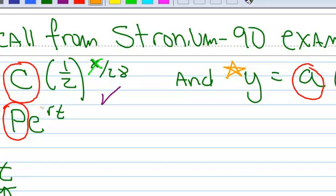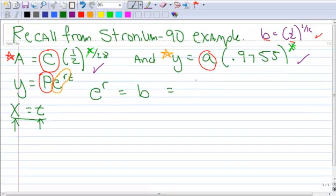Alright, so we already know that e to the r has got to equal our b. So e to the r has to equal b. And you already know that that equals one-half to the one over k. All of these things mean the same thing.